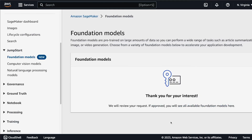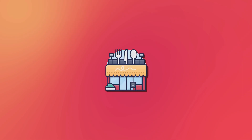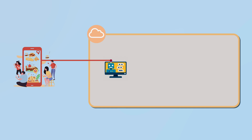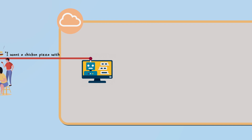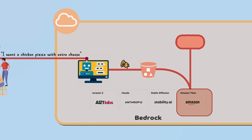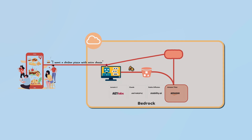One advantage of Bedrock is that it allows businesses to customize pre-built AI models with a small amount of labeled data, useful when dealing with sensitive data like customer orders or financial information. For example, a restaurant chain wanting a chatbot to take food orders can provide a few labeled examples — such as 'I want a chicken pizza with extra cheese' — upload this data to Amazon S3, and Bedrock will fine-tune a pre-built model. All data is encrypted and stored securely in the customer's virtual private cloud, so even Amazon won't have access to it.